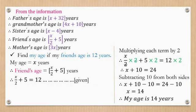Now you are going to find out my age. For finding out my age, first remove plus 10 by subtracting 10 from both sides. So X plus 10 minus 10 is equal to 24 minus 10. Therefore X is equal to 14. So my age is 14 years.